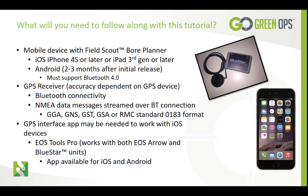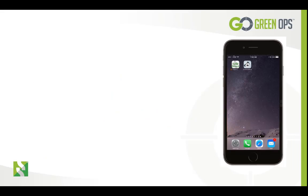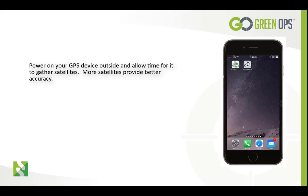There are compatible GPS receivers that will work with iOS mobile devices without the need to run an additional app in the background. For assistance in choosing a GPS device to fit your need, please contact your local DitchWitch dealer. During this tutorial we will be using the Bluestar GNSS receiver and my iPhone 6 Plus. This GPS unit will require us to run an interface app in the background to connect the external GPS to Field Scout. We need to begin by powering on our GPS receiver outdoors and allow it to gather satellites and get a GPS lock.